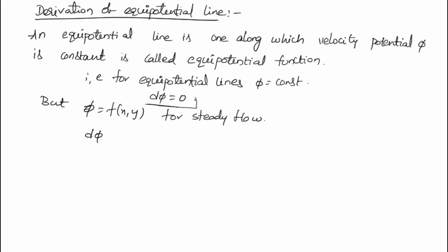So d phi, according to the chain rule, if we differentiate this function in terms of x and y, that equals: d phi = (∂phi/∂x) dx + (∂phi/∂y) dy.